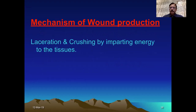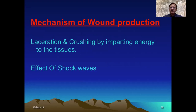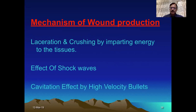The mechanism of wound production involves laceration and crushing by the energy translated to the tissues. When the bullet strikes at high speed, the whole energy is transferred to the tissues. They start travelling with the same speed as the bullet in the forward and outward direction, causing extensive laceration and crushing. There is also the effect of shock waves — pressure waves that travel alongside the bullet — producing effects on the target.